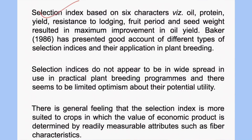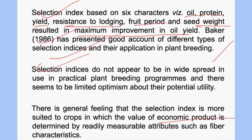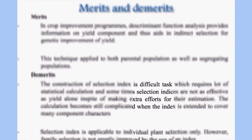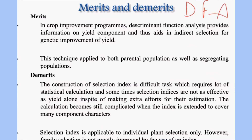A selection index based on six characters — oil, protein, yield, resistance to lodging, food period, and seed weight — resulted in maximum improvement in oil yield. Walker in 1986 presented a good account of different types of selection indices and their applications in plant breeding. Selection indices do not appear to be widespread in practical plant breeding programs, but seem best suited to crops where economic product value is determined by measurable attributes such as fiber, oil content, and protein content.